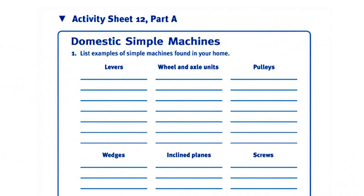Finally, distribute a copy of activity sheet 12 part A to each student. Tell students to take the sheet home and make a list of simple machines that they find around the house. During the next activity, a class discussion will focus on their findings.